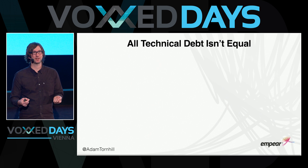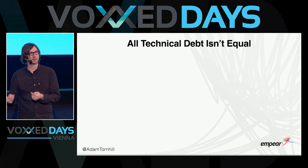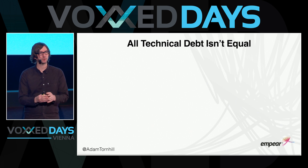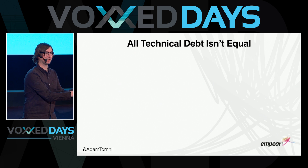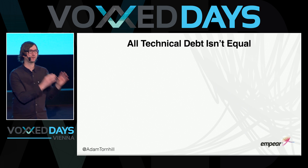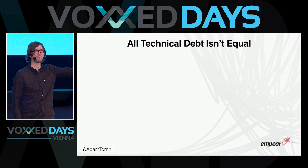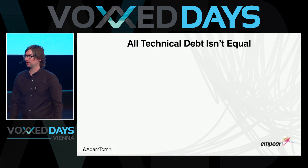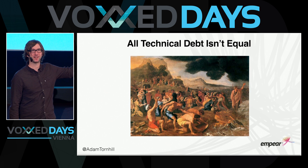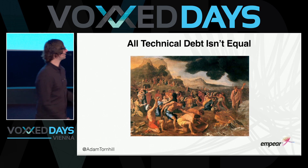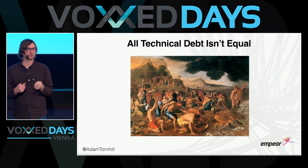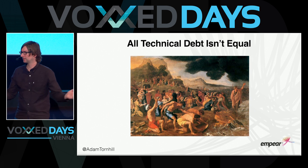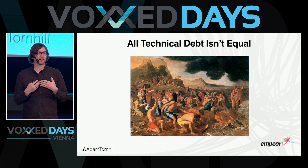Last year I visited one organization that, prior to my arrival, had used a tool capable of quantifying technical debt. They had thrown it at their 15-year-old codebase, and this tool reported that they had accumulated 4,000 years of technical debt. Just to put that into perspective, 4,000 years ago is when Moses parted the Red Sea. So 4,000 years of technical debt — it may well be accurate, but it's not particularly helpful. Where do you start if you want to pay it off? Is all that debt equally important?